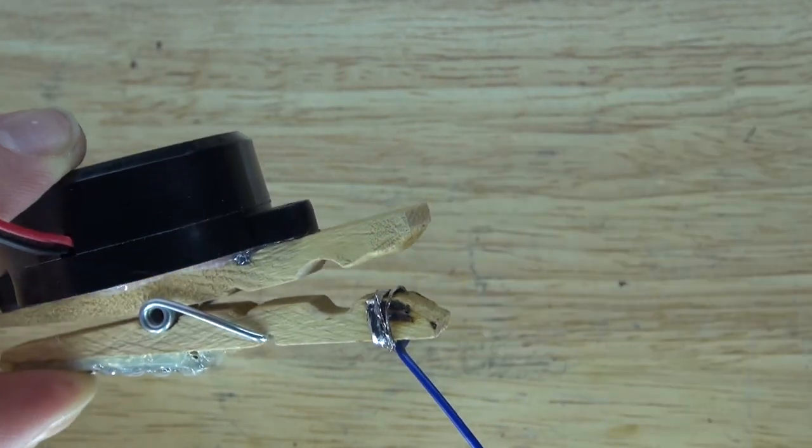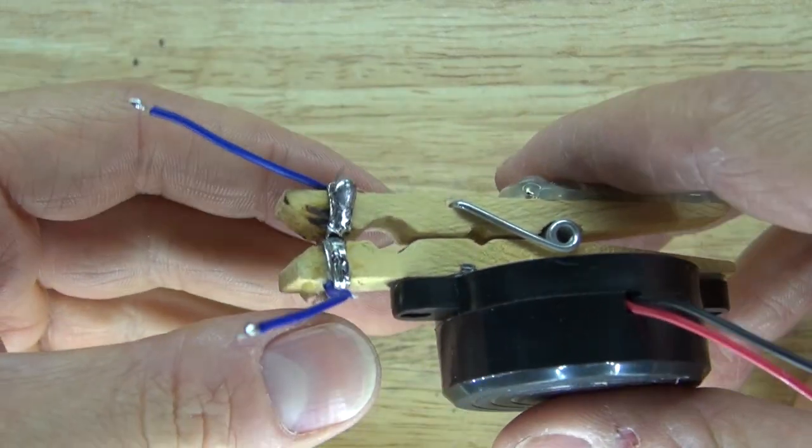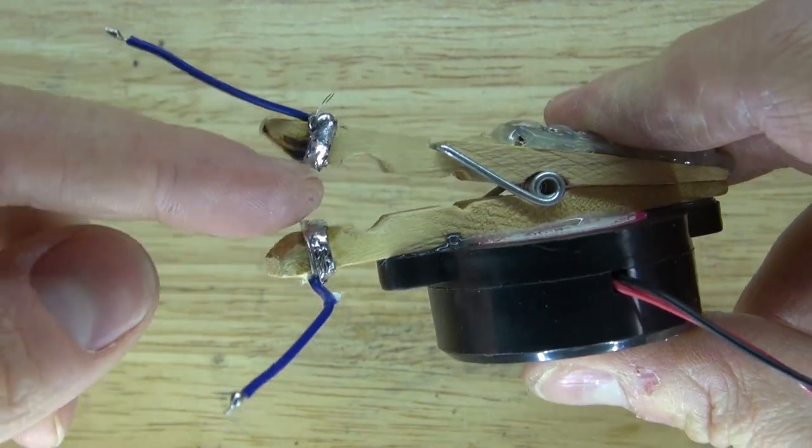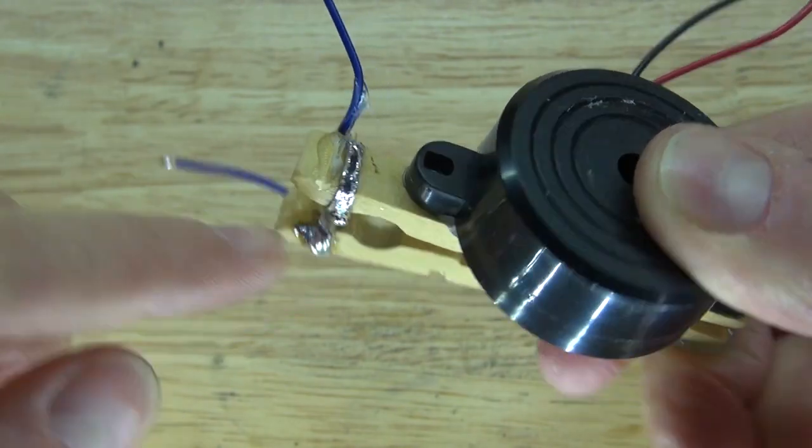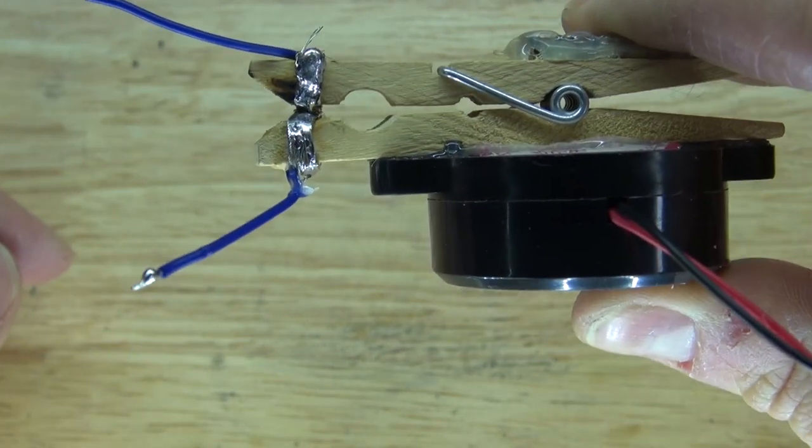And there, it should look just like this. Repeat the same process on the opposite side. And there. Now both of the wires, when they touch, it'll close the circuit. Just like that.